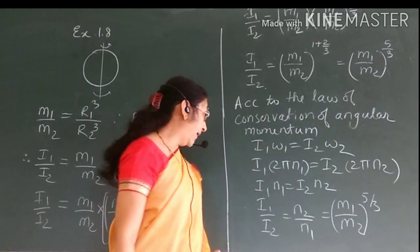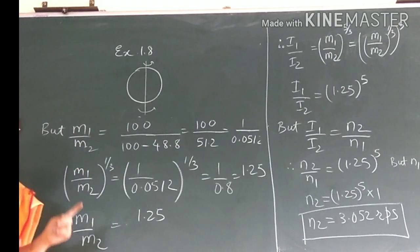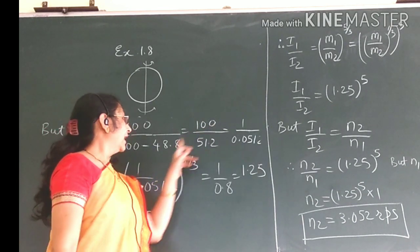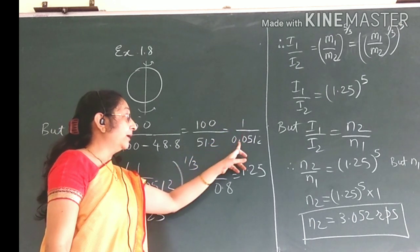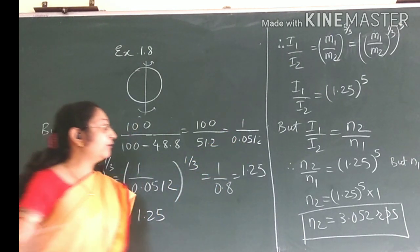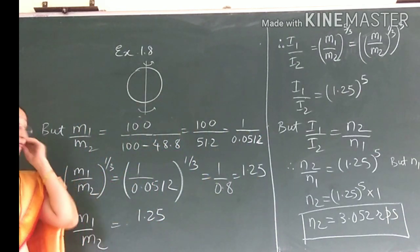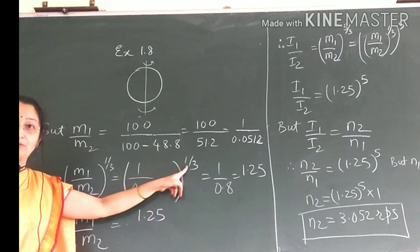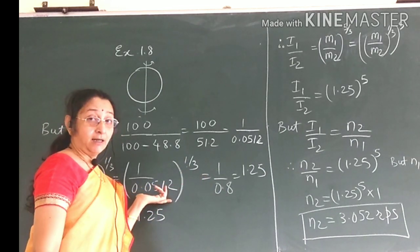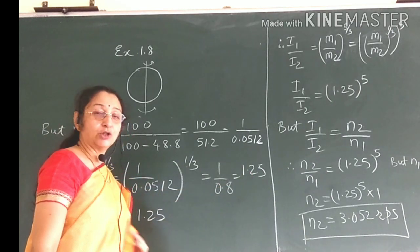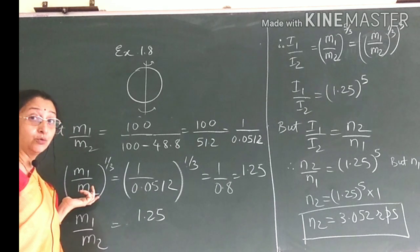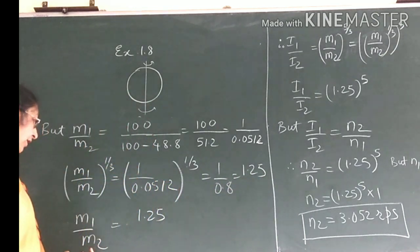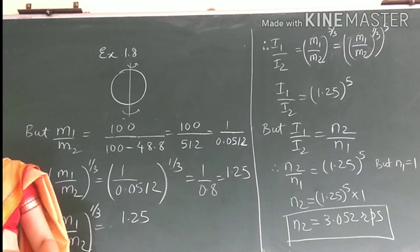We have found that I1 upon I2 equals (m1/m2) to the power of 5/3. Now, m1 upon m2 equals 100 upon 51.2, which equals 1.953. So (m1/m2) to the power of 5/3 gives us I1 upon I2 approximately equal to 1.25 to the power of 5/3, giving approximately 1.25 after computation.